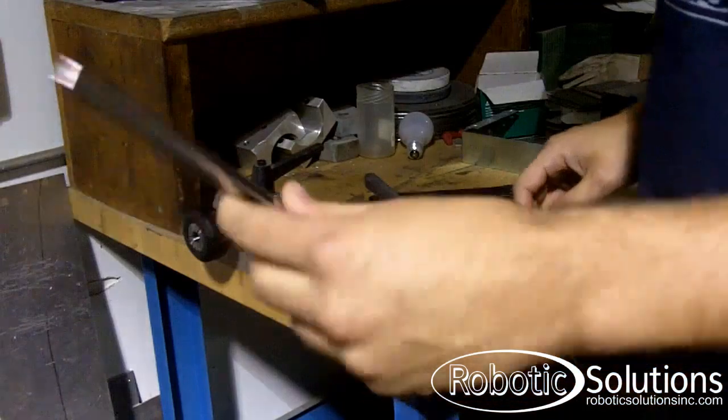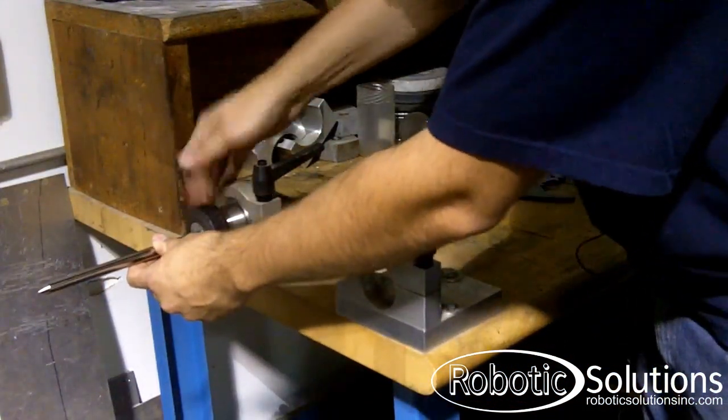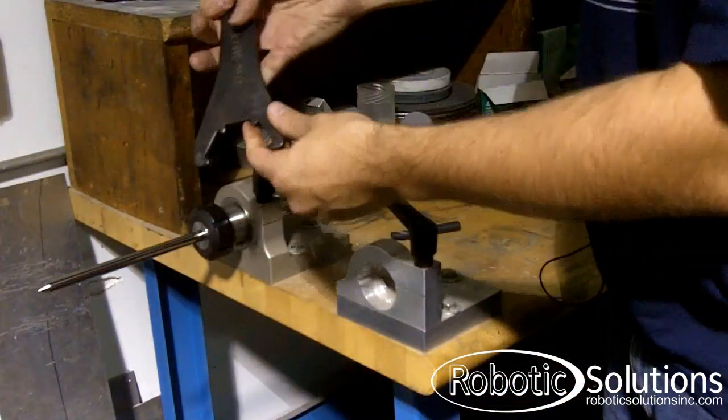Now you insert your new tool. We're just using a pointer tool for this demonstration. Tighten it in and make sure you use the wrench.